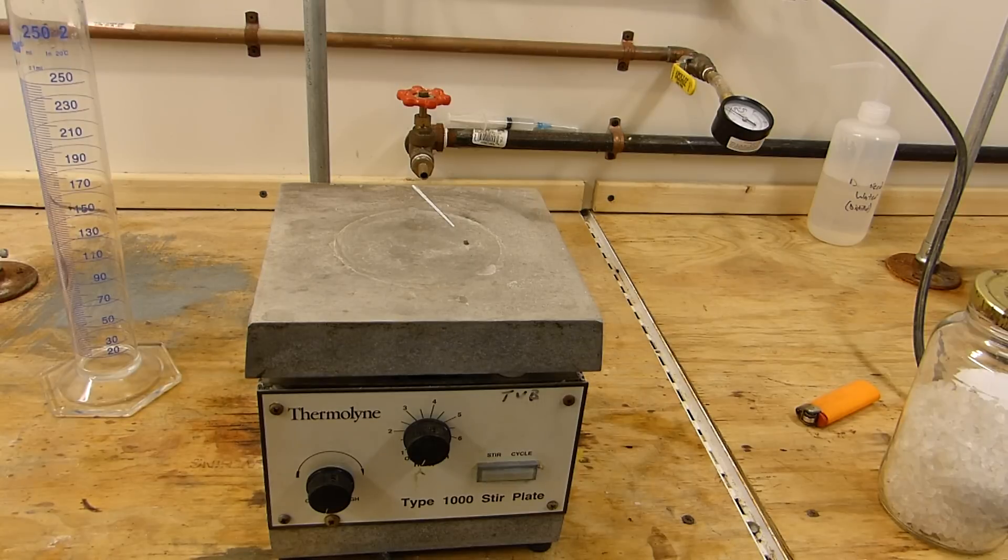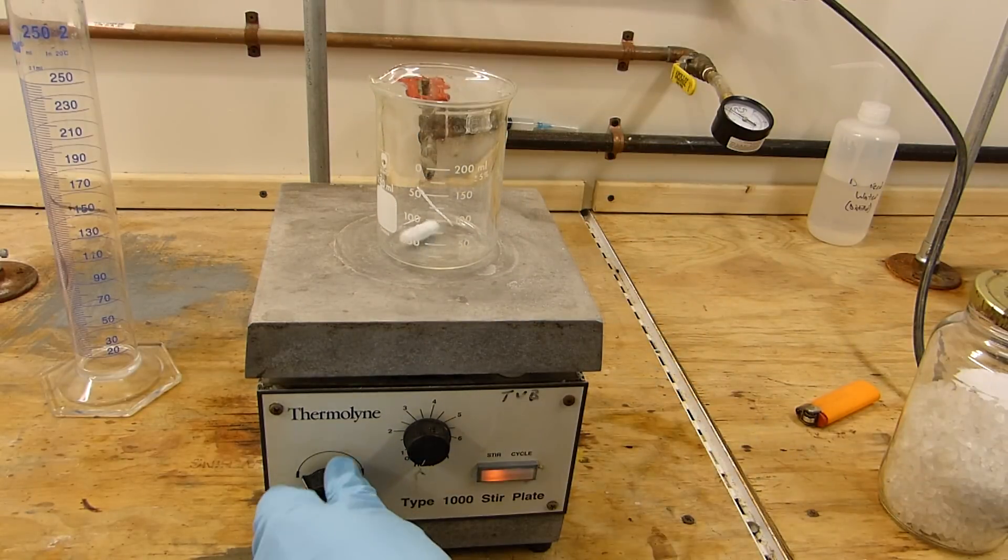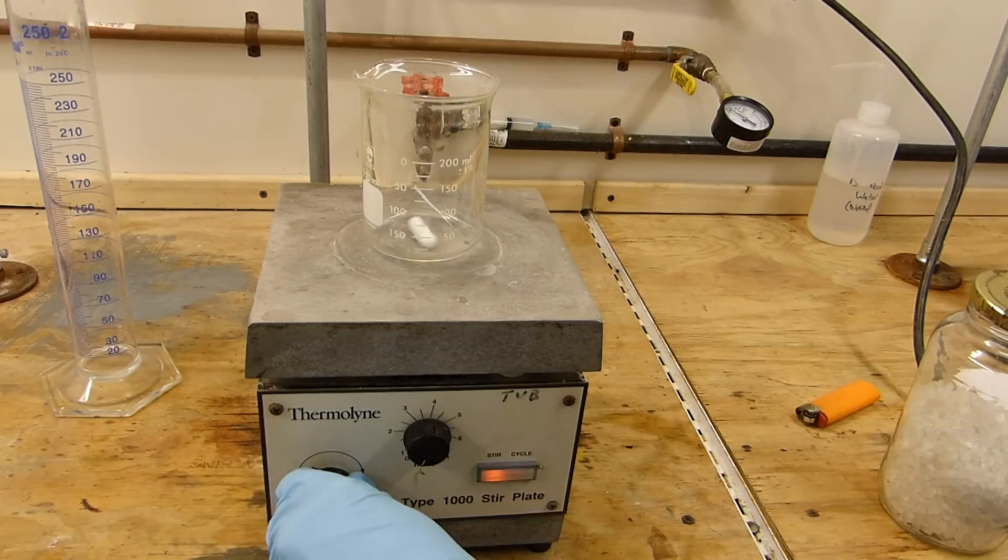While the reactants are in the freezer, a concentrated solution of sodium chloride is prepared, which will be used to wash and dry the isopropyl nitrate product later.